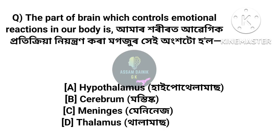The part of the brain which controls emotional reaction in our body is. Amar hori yon abhegik protiker ni anton kora moghozur ke onkotu hol. The answer is option A: Hypothalamus.